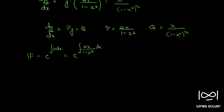Since the differential of the denominator (1 minus x squared) is minus 2x, and we have 2x in the numerator, we put a minus sign and integrate to get minus log(1 minus x squared). So the integrating factor becomes 1/(1 minus x squared).